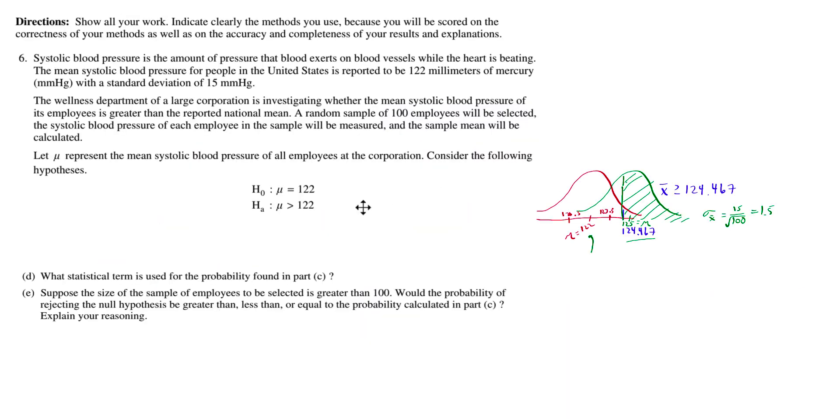So part D, what statistical term is used for the probability found in part C? If you notice, this probability is the probability that you reject, that you correctly reject the null, right? It should be rejected because it's higher than 122. If you did not reject it, if you're on the other side of this line, that would be the probability of a Type 2 error. So this is the opposite or the complement of the probability of a Type 2 error. That is called the power of a test.